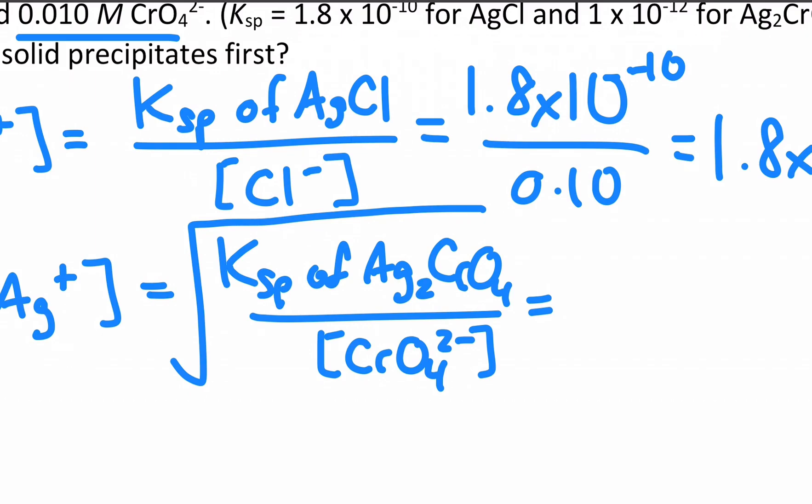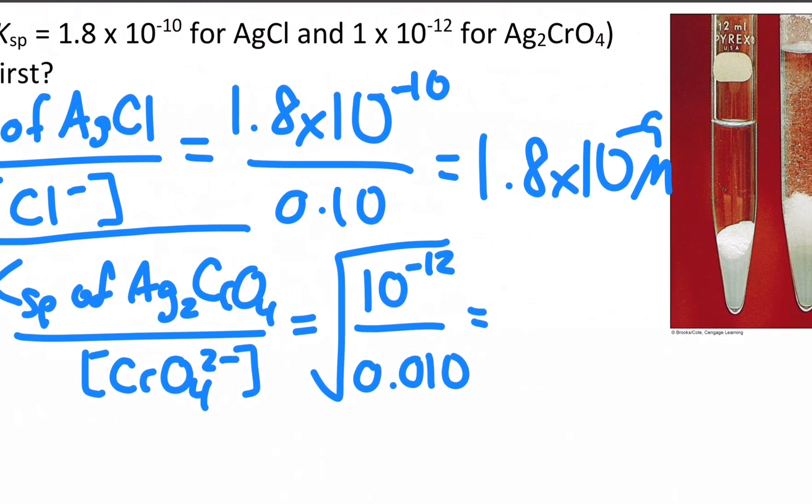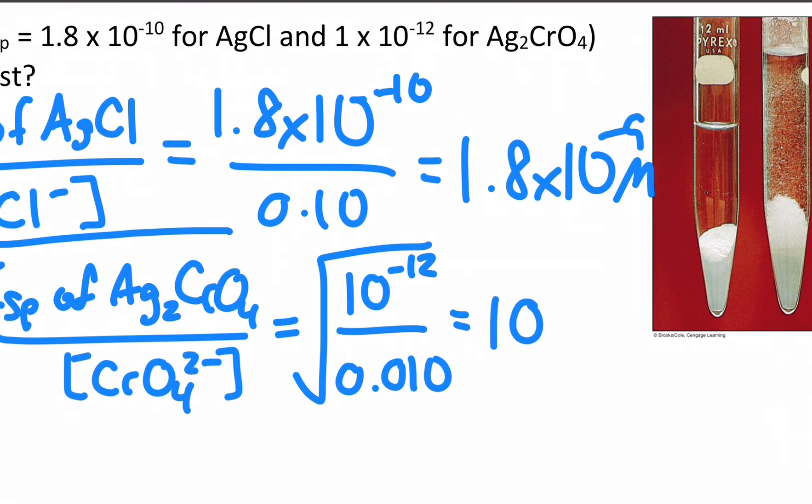So if I plug in our numbers, I get the square root of the Ksp up above for silver chromate as 10 to the negative 12, divided by the chromate, 0.010. Nice numbers in these problems, no calculator needed. We get 10 to the minus 5 molar.